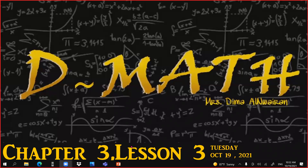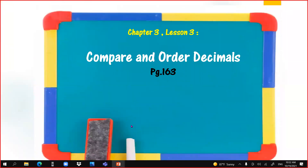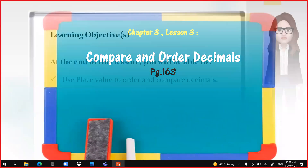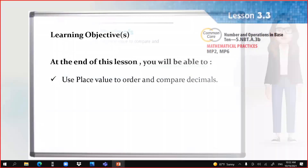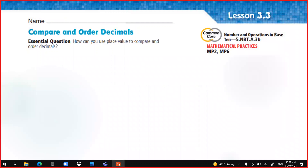Let's start our new lesson in Chapter 3, which is about comparing and ordering decimals. Please open your book to page 163. At the end of this lesson, we will be able to use place value to order and compare decimals.